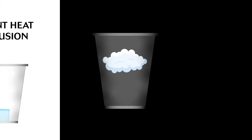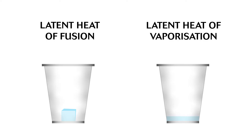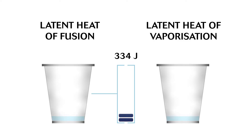There are two main types of latent heat: latent heat of fusion and latent heat of vaporization. Latent heat of fusion is the energy required to change a solid into a liquid. For example, the latent heat of fusion of water is 334 joules per gram. This means that it takes 334 joules of energy to melt 1 gram of ice into 1 gram of water.